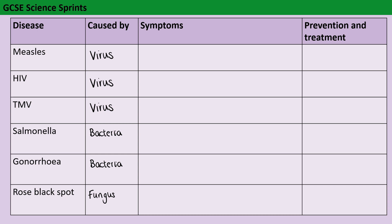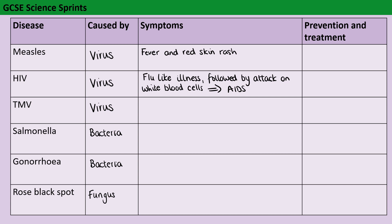In terms of the symptoms, measles gives you a very high fever but also a red skin rash. HIV has two parts to the symptoms. Initially you have flu-like symptoms, but after quite a long period of time — what we call a latency period — the virus starts to attack the immune system and the white blood cells. Eventually this leads to AIDS, or autoimmune deficiency syndrome, where your immune system isn't working properly anymore. When people with HIV die as a result, it tends not to be from the HIV itself; they tend to die of something like pneumonia or a cold because their immune system couldn't fight off that infection.